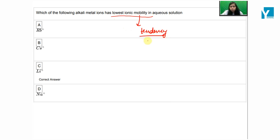Mobility decreases from top to bottom because atomic size increases. As the size increases, the tendency to move through water will decrease.